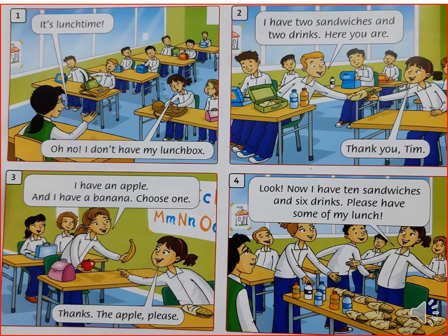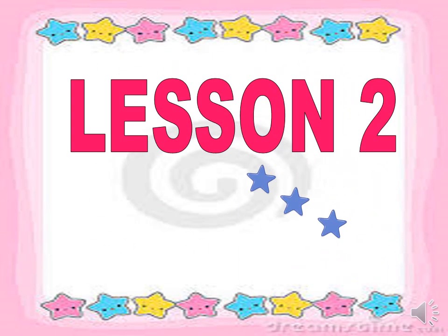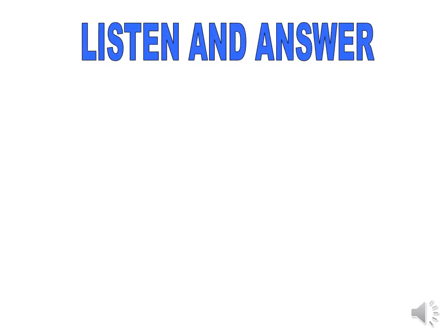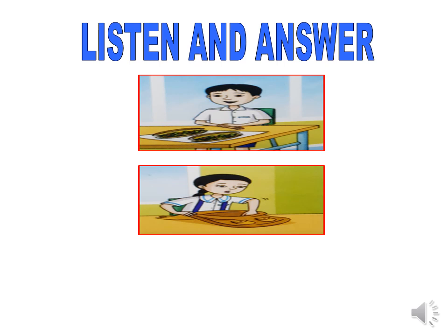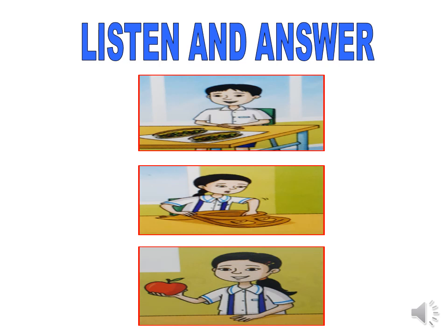Well done. We will study Lesson 2. Look, listen and answer my questions. Today we will study 'I have' and 'I don't have.' Now look at picture one — tell me, what do you have? Two sandwiches. You can say: I have two sandwiches. The second picture — do you have a lunchbox? No, I don't. You can say: I don't have a lunchbox. The third picture — what do you have? I have an apple. Very good.